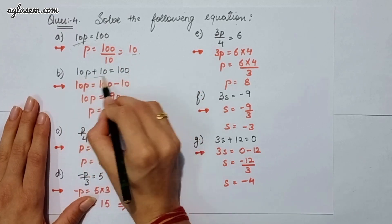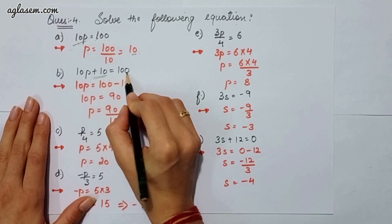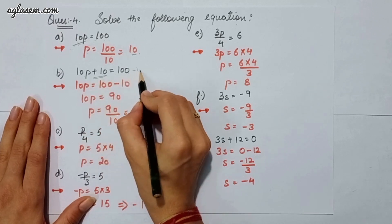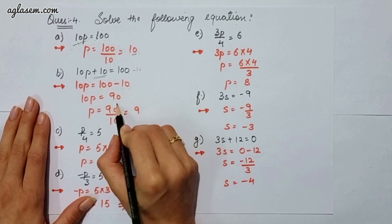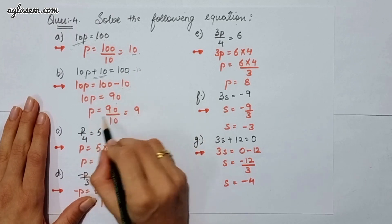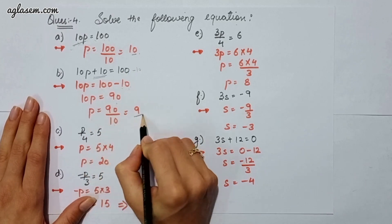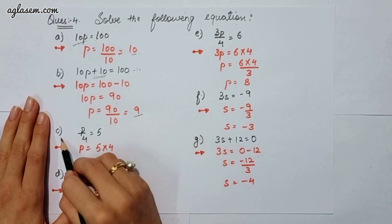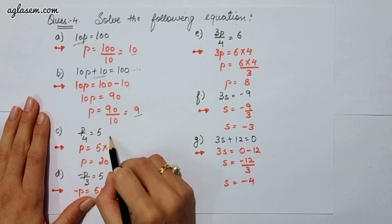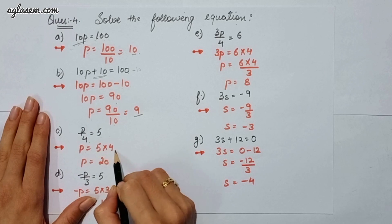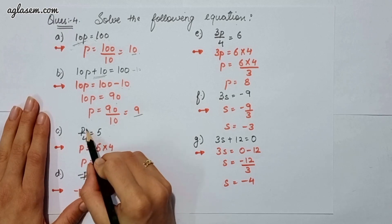So p is equal to 90 upon 10, which equals 9. The third part says p divided by 4 is equal to 5. p is equal to 5 times 4 because 4 is dividing p, so after transposing it multiplies, therefore p will be 20.